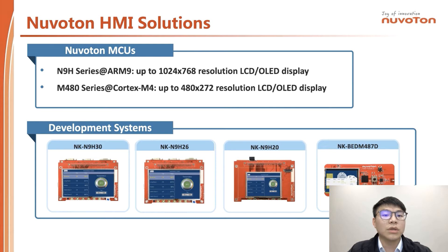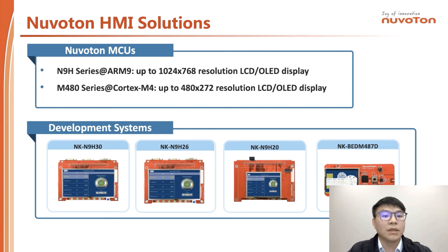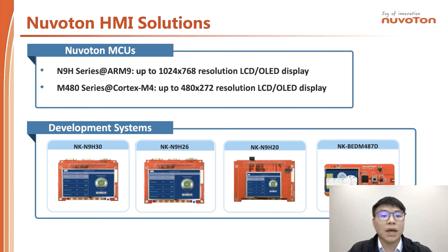Now I will introduce the Nuvoton HMI solution. For the HMI solution based on EMWIN, Nuvoton has already provided 3 product series. The first is the N9H series, based on an ARM9 core with 300 MHz core speed. It contains three sub-series: N9H20, N9H26, and N9H30, supporting up to 1024 by 768 resolution display — this is a high-end resolution.